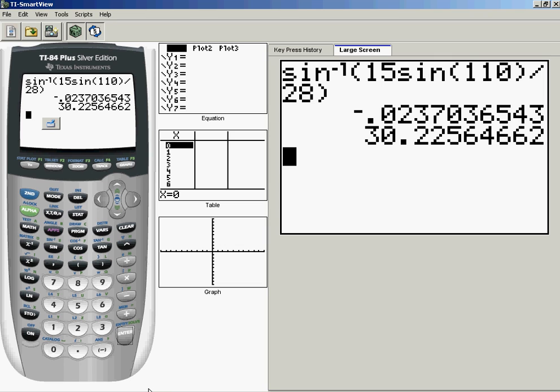30.22 degrees. So if you get an unreasonable answer, like negative something for an angle, you know, which in this case it's a triangle, it can't be a negative angle, you might want to check and make sure you're in degree mode. The default on the graphing calculator is to be in radian mode. So you always want to check that. So 30.23 degrees.